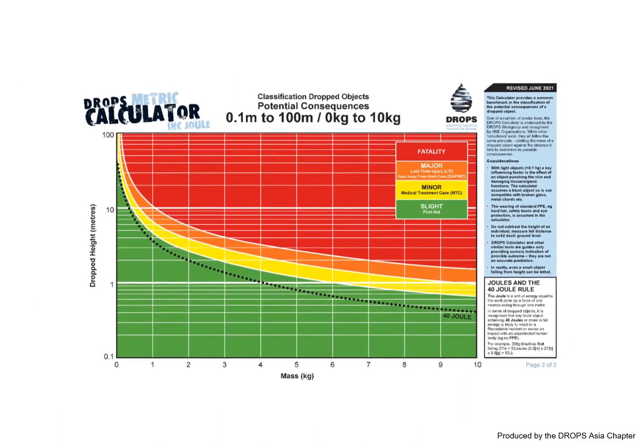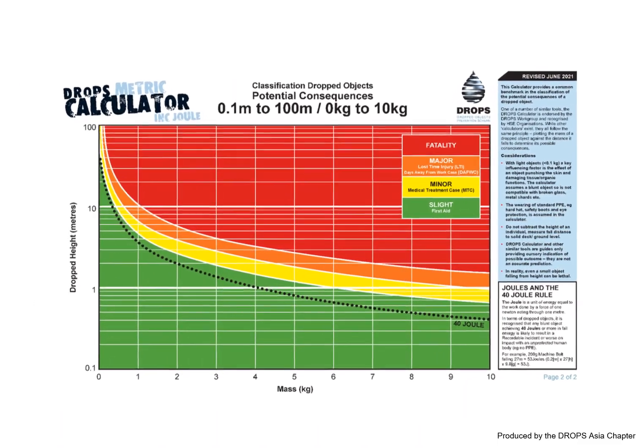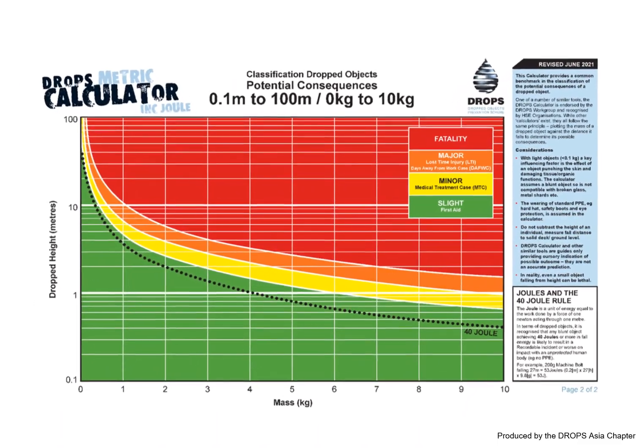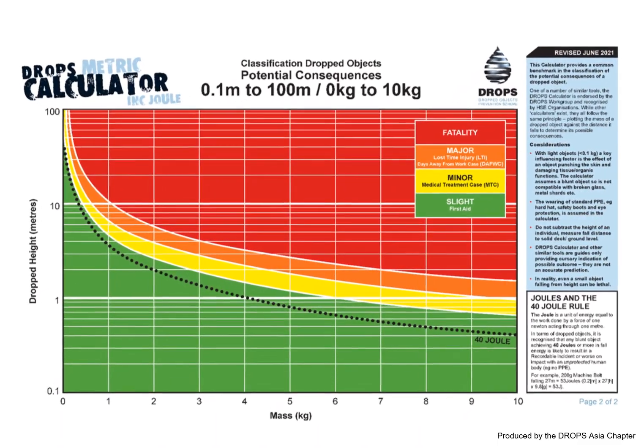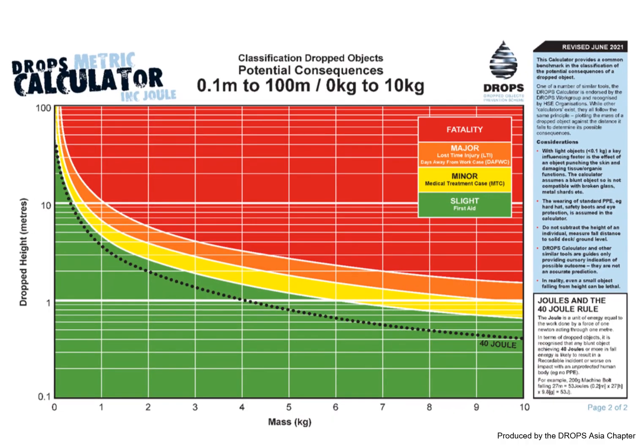For objects heavier than 1 kilogram, use the second page of the DropsMetric Calculator. Remember, the DropsMetric Calculator is a guide, not an exact prediction. Always prioritize safety and use this tool as part of a broader risk assessment strategy.